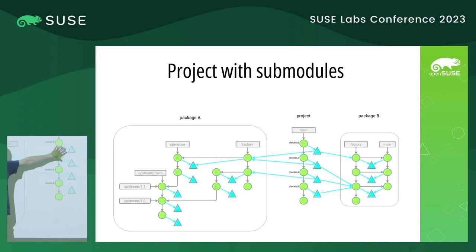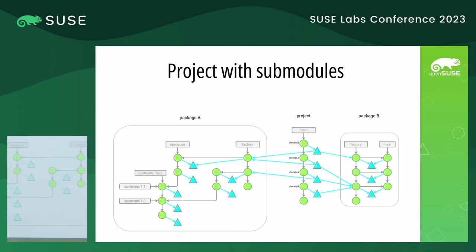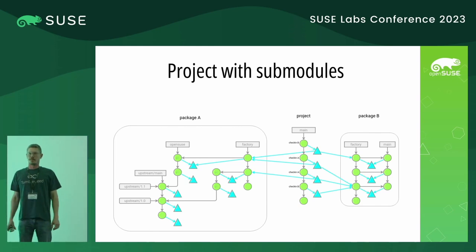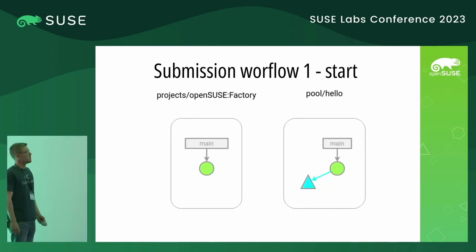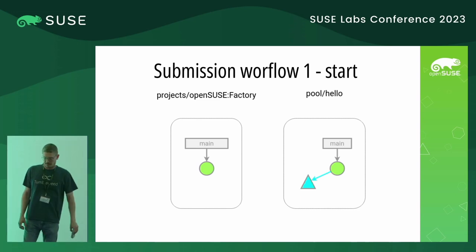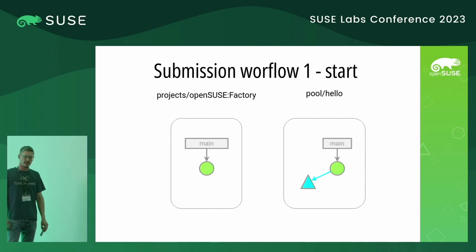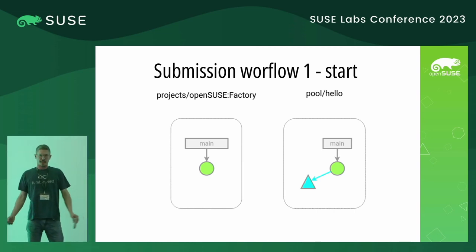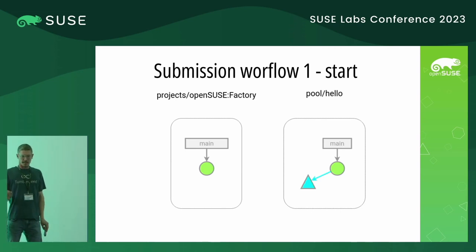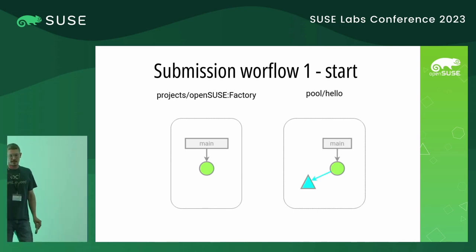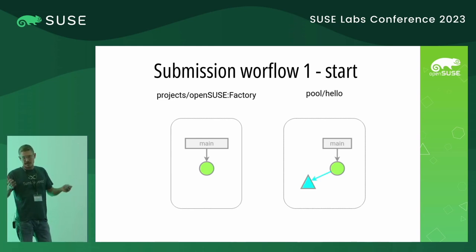It could be MicroOS, it could be ALP, or your own thing, and then maybe you define your own rules for how you sign check-ins into this project. Moving on to how this works on a project level — the development workflow. A simple example: we have an empty factory and a simple hello package and we want to submit that to factory. Both are Git repos. I'm thinking of the way GitHub, Gitea, or GitLab does it — a project called 'projects' with a repo called 'factory', and a project called 'pool' that has the package hello in it.